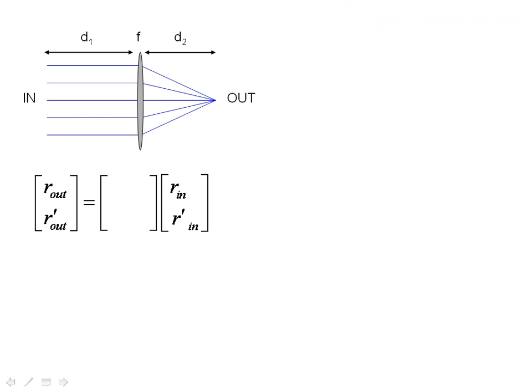Our question is, how do we combine ray matrices if we have a system? So let's take this system right here, where our input plane is defined to be right there, and our output plane is defined to be right here. And this system is composed of essentially three separate elements: space, followed by a lens, followed by a second space, D2.